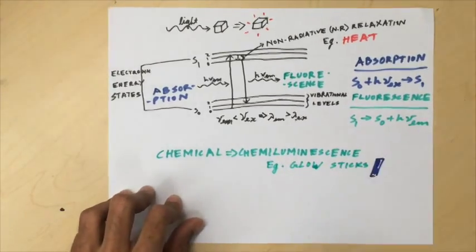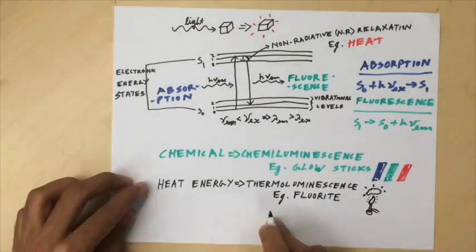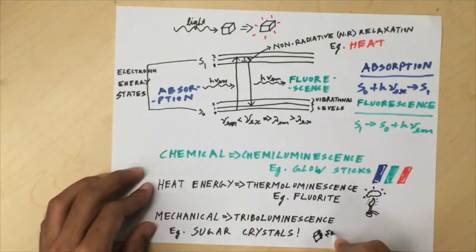Other than light, chemical, heat, and mechanical energy can also be used to excite electrons to higher states, resulting in chemi-, thermo-, and triboluminescence respectively.